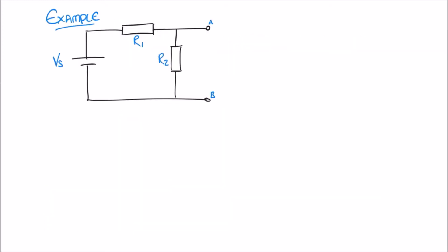Let's look at a simple example of how we can put these three steps into practice. I have a small circuit here — not very complicated, but we can still simplify it further using Norton's theorem. The supply voltage V_S on the left-hand side is 10 volts. Resistors R1 and R2 are 390 ohms and 470 ohms respectively.